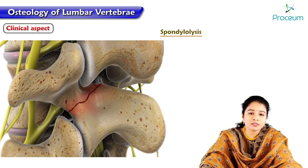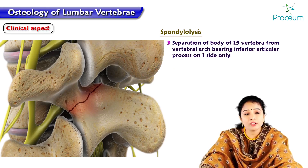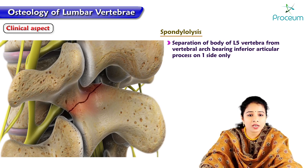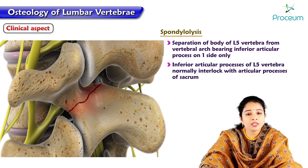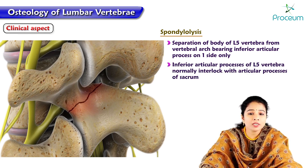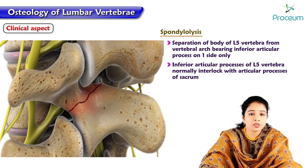Spondylolysis: in this condition there is a separation of the L5 lumbar vertebra from the vertebral arch bearing the inferior articular surface on one side only. The inferior articular process of L5 normally interlocks with the articular process of the sacrum.